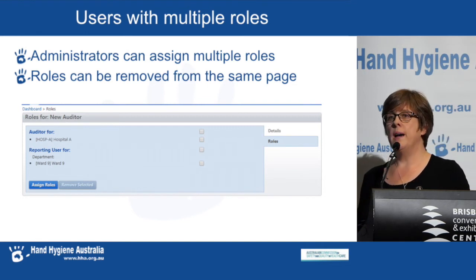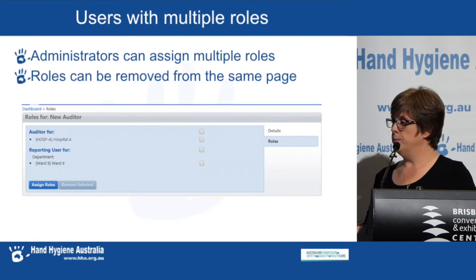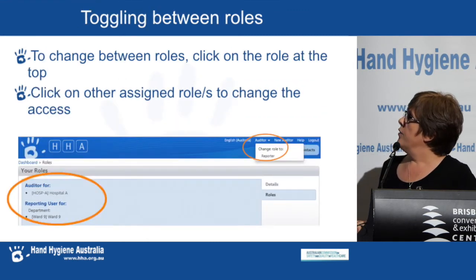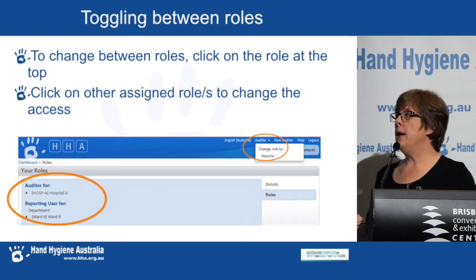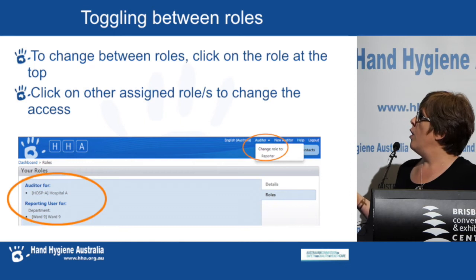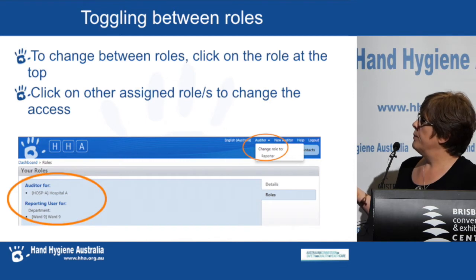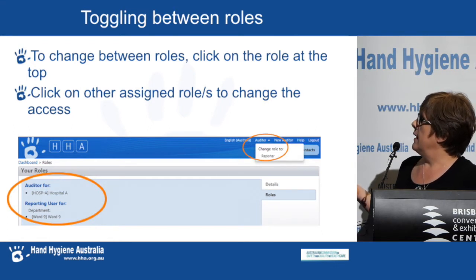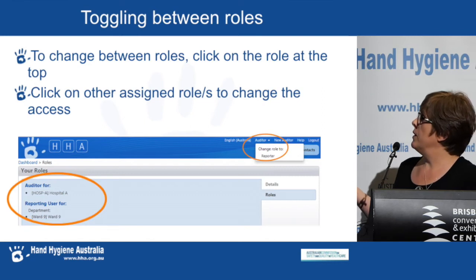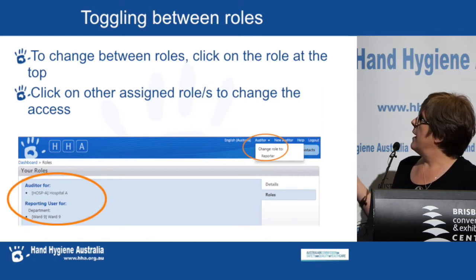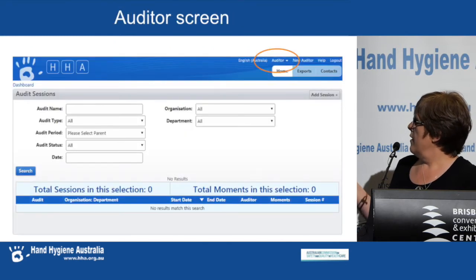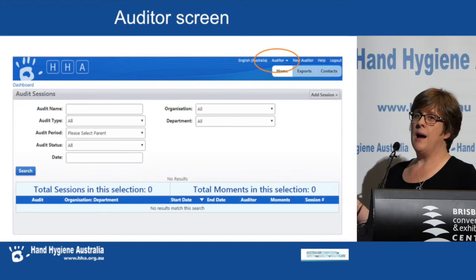From one page, you can allocate or take off a number of roles very easily. For someone with multiple roles, they will be able to toggle between those roles by clicking on the role button that appears at the top of the page. In this example, the person is currently viewing their auditor role. By clicking on that, you'll see what other roles they have attached. As an auditor, they would see the page for the organisation, and when toggling to the other role, they would see the page for the one department they are a reporter for.